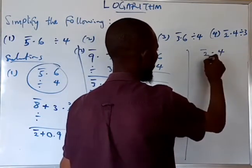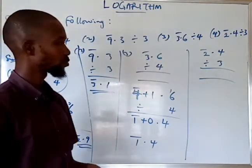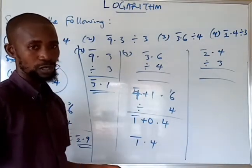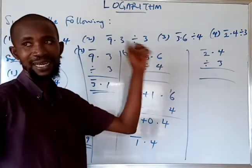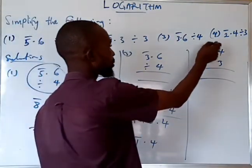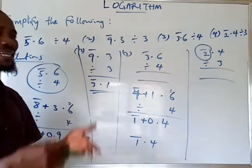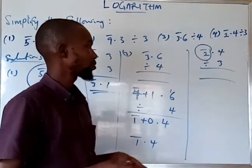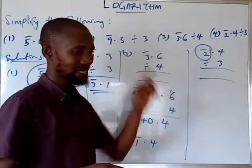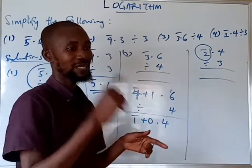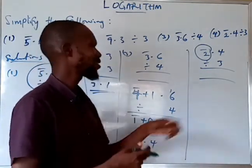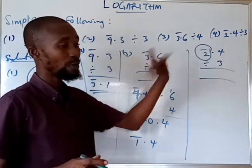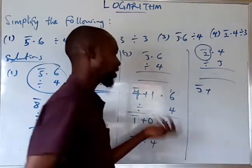Finally, question 4: we have bar 2.4 divided by 3. Observing this, it's clear that 3 cannot go into bar 2 because it's not possible. To make it possible, the 2 carrying the bar has to be re-expressed as the nearest number that when divided by 3 will give no remainder. There are many multiples of 3 — 6, 9, 12 and so on — but we need the nearest one. The next number after 2 that divides by 3 without a remainder is 3.